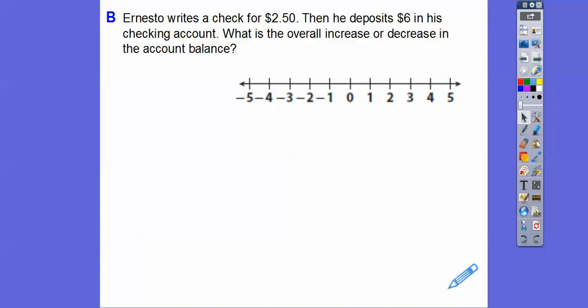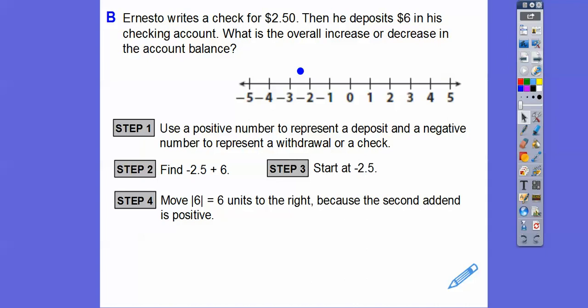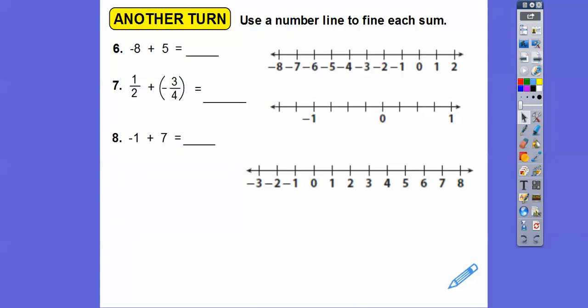Ernesto writes a check for $2.50, then he deposits $6 into his checking account. What's the overall increase or decrease in the account balance? We use positive numbers for deposits and negative numbers for withdrawals. Writing a check is negative $2.50, and depositing $6 is plus 6. So start at negative 2.5, then go 6 units to the right. That takes me to 3.5. The account balance will increase by $3.50.